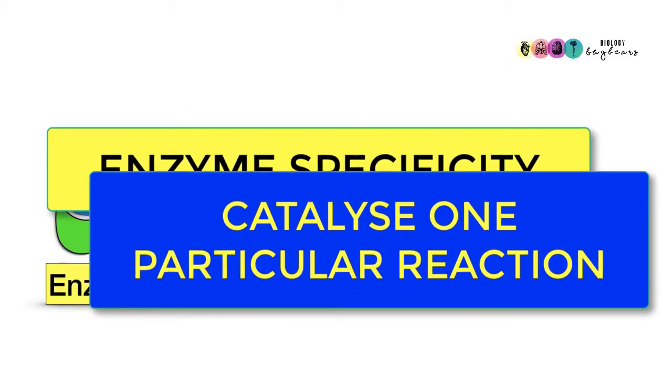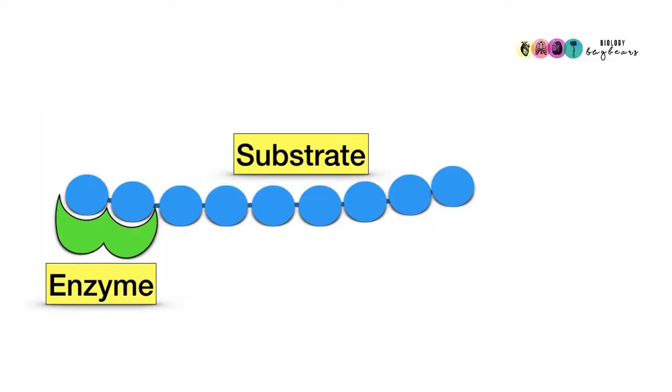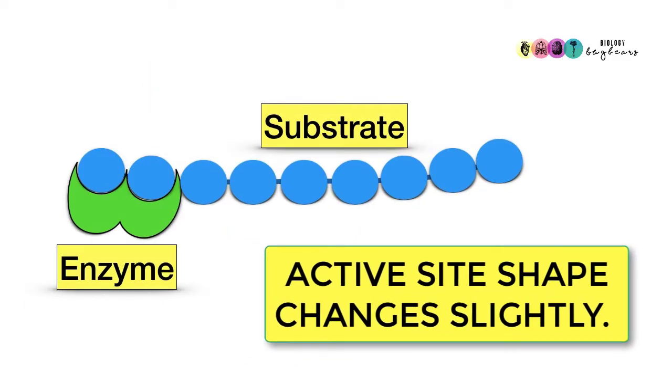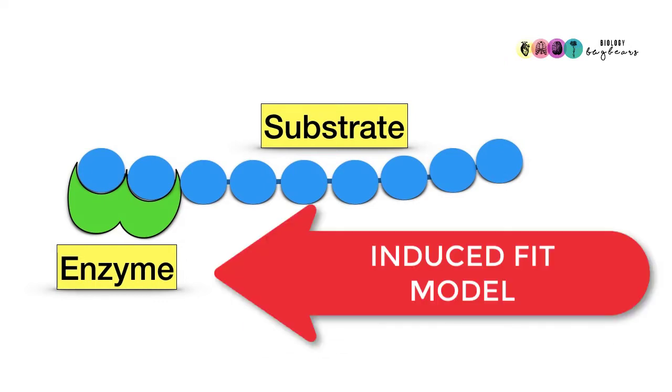When an enzyme and its substrate combine, the substrate molecule loosely binds with the active site of the enzyme. The active site of the enzyme actually changes shape slightly to fit around the substrate molecule better. This is known as the induced fit model.